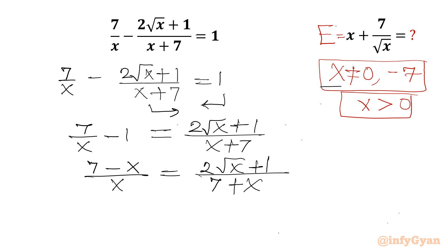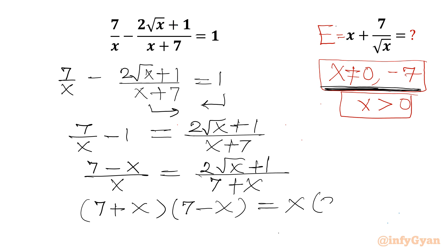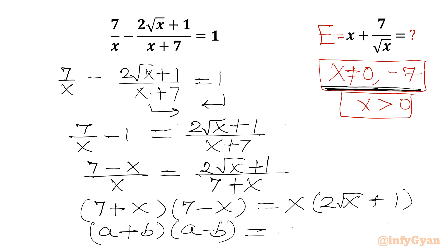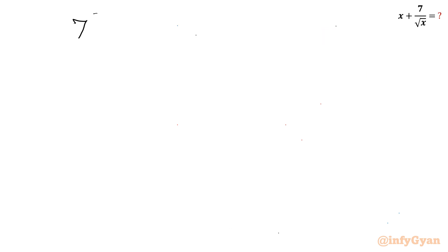Since x is not equal to 0 and x is not equal to minus 7, I can cross-multiply. So (7 + x)(7 − x) equals x times (2√x + 1). On the left-hand side, using the difference of two squares identity (a + b)(a − b) = a² − b², we get 7² − x², so 49 minus x squared equals x times (2√x + 1).